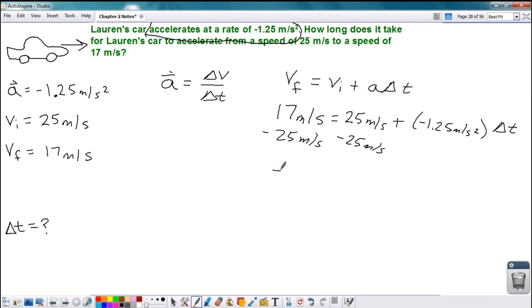So 17 minus 25 is -8 meters per second, which equals -1.25 meters per second squared times the change in time.